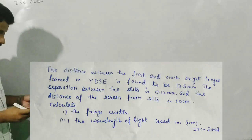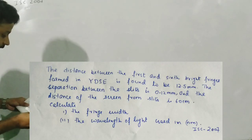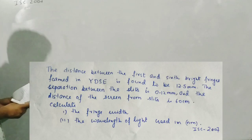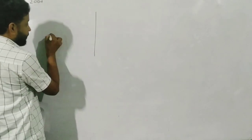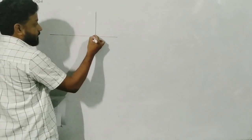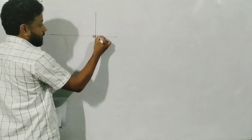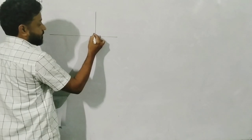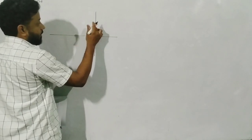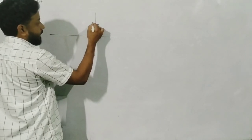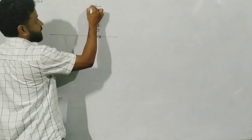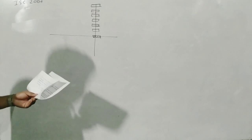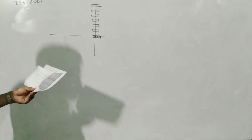The question says that the distance between the first and the sixth bright fringe formed in Young's double slit experiment is found to be 12.5mm. When we do the setup and see the fringes, the central bright maximum is the zero order fringe. Then you have dark and bright again — second, third, fourth, fifth, and sixth bright fringes.